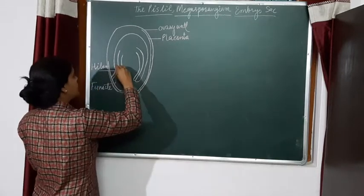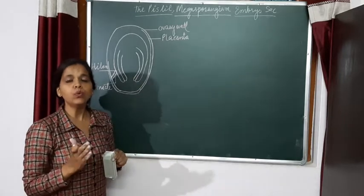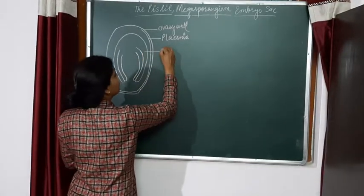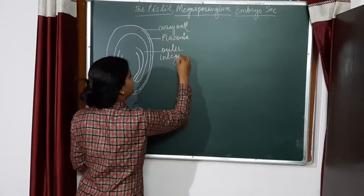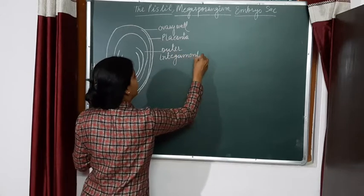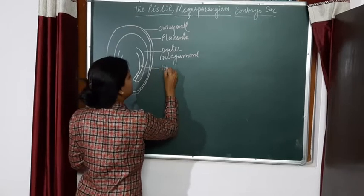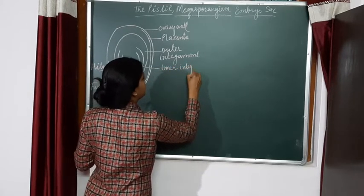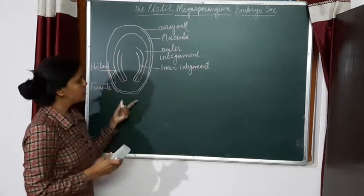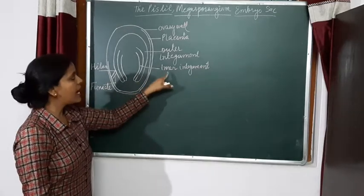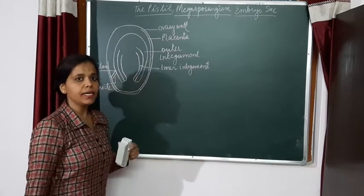Now you can see outer one and two. So these are the two integuments. One is the outer integument, and the other is the inner integument. So you know that angiospermic ovule structure is bitegmic - one is the outer integument and the other one is the inner integument.